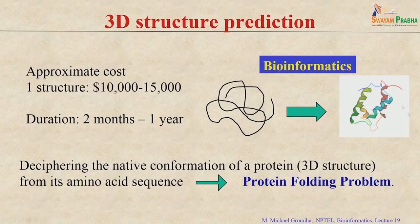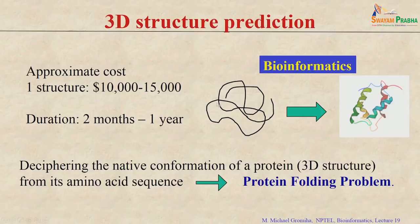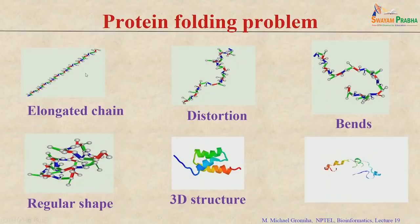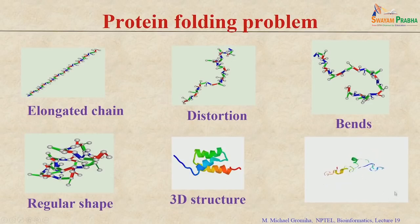Deciphering the native conformation of a protein from its amino acid sequence is called the protein folding problem. In 1963, Anfinsen stated that the amino acid sequence contains all the information regarding the structure, making it possible to get 3D structures from just the amino acid sequence. The animation shows how a protein goes from an unfolded state and folds into a stable 3-dimensional structure.